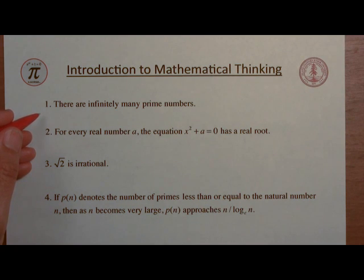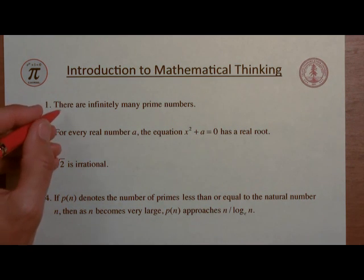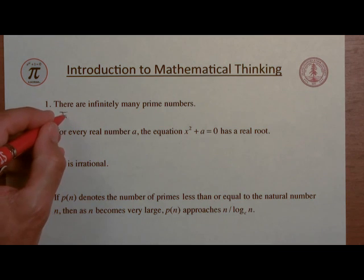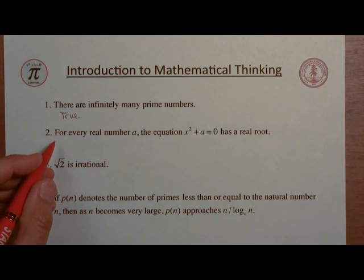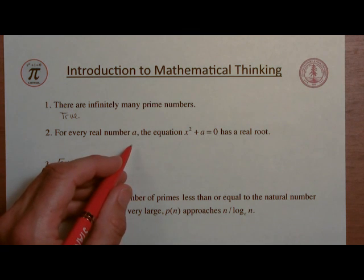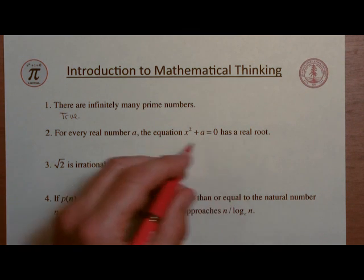So we've proved the first of our four examples. There are infinitely many prime numbers. That one's true. What about the second one? Well, it says that for every real number a, the equation x squared plus a equals 0 has a real root.